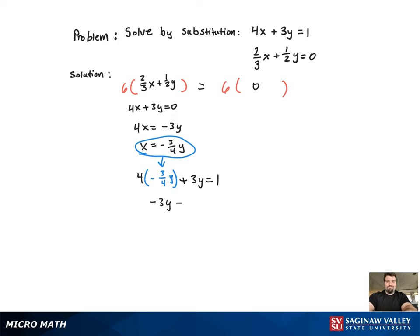Now y is the only variable, so I just have to combine the like terms. But what happens is the y's cancel out. And since zero does not equal one, and it's a false statement, that means it's a no solution.